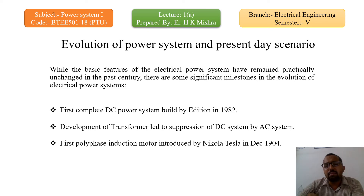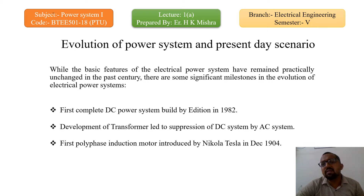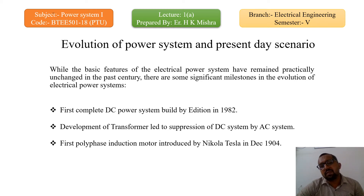After that, the development of the transformer led to the suppression of the DC system by the AC system. The main reason the transformer was introduced was that the DC network had lots of losses and high cost. To minimize the overall cost as well as the losses in the system, AC networks were developed. For the proper operation of AC networks, the transformer was introduced in electrical power systems.